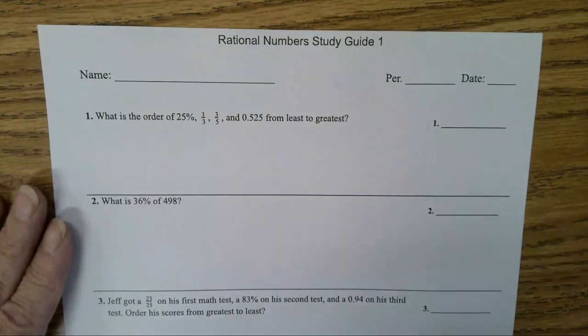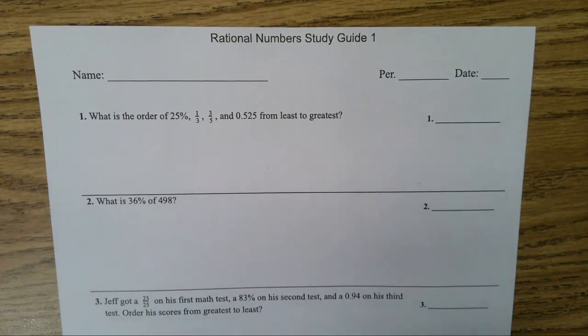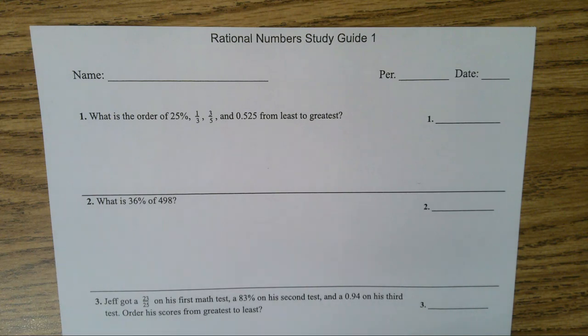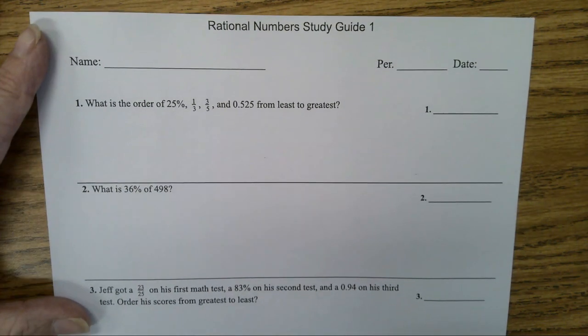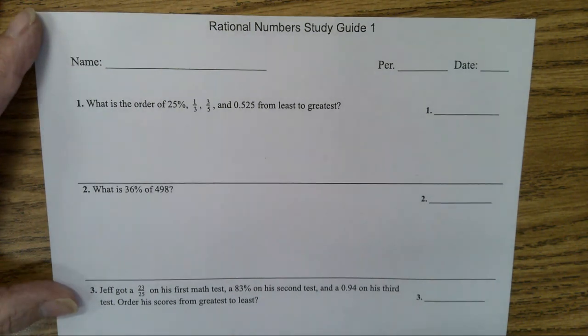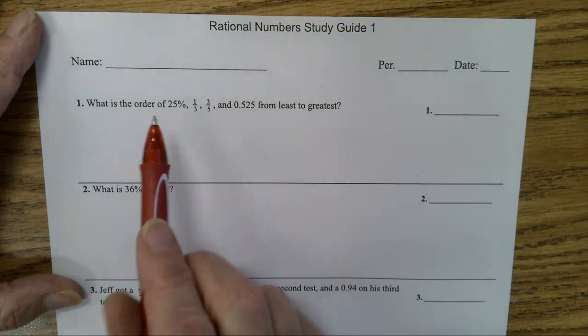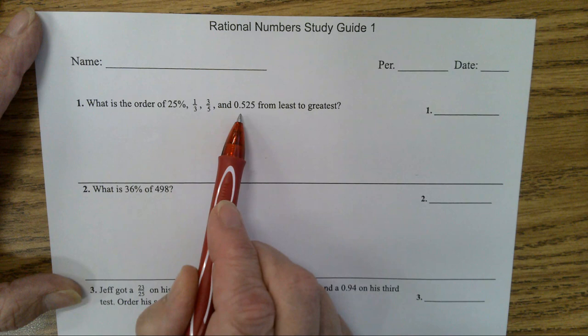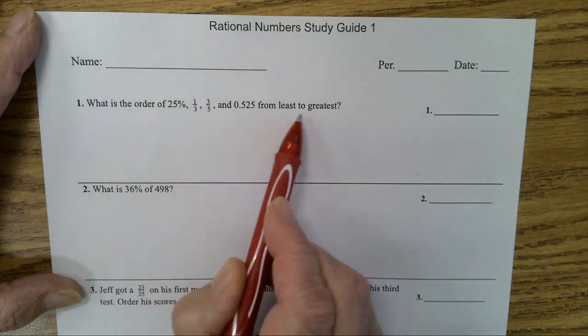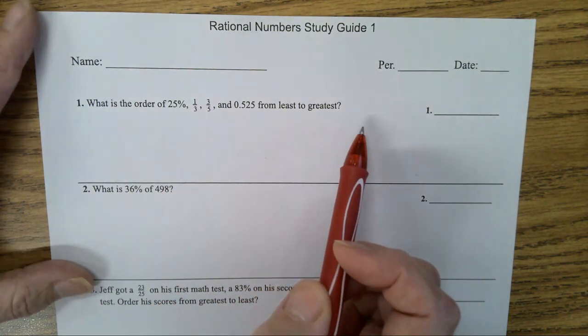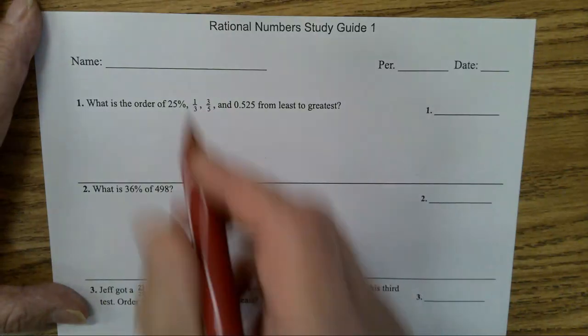Okay, so these are the answers on how to do a lot of the problems on study guide number one. The first problem we're going to do is problem number one: What is the order of 25%, 1/3, 3/5, and 0.525 from least to greatest?